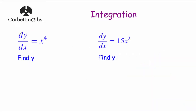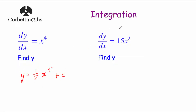Our first question: dy by dx is equal to x to the power of 4. We need to integrate it to find y. To integrate, we add 1 to the power — so that'll be x to the power of 5 — and then divide by the new power. There was a 1 in front, so 1 divided by 5 is a fifth. There could have been a number, so we write plus c. The answer is y equals one fifth x to the power of 5 plus c. We have gone from dy by dx back to y by integrating.